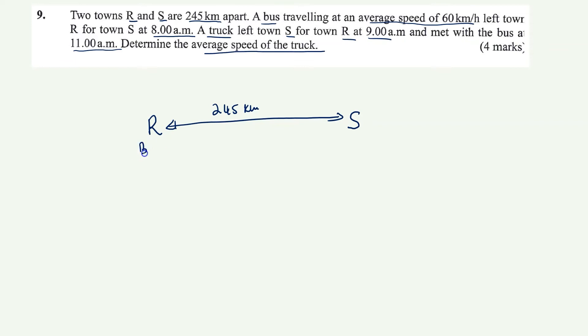Now we have a bus leaving going to town S. And the speed for this bus is, so speed is equal to 60 km per hour. And it is going to leave town R at 8am. And then we are told there is a truck on this side of the town, town S.